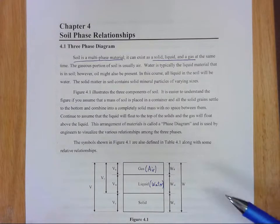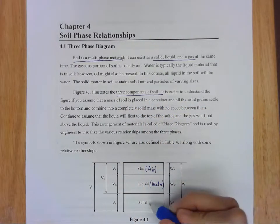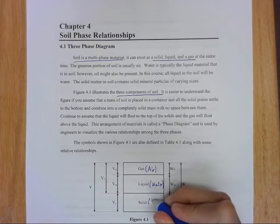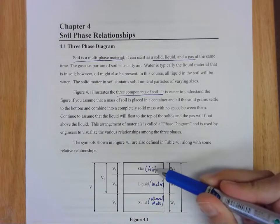So we've got these three components. Like I said, we'll have solid and that's just essentially the mineral material, the solids of the soil, the water, and the air.